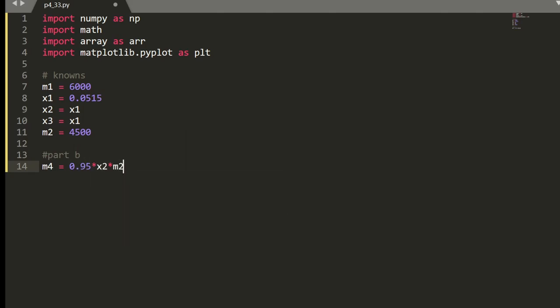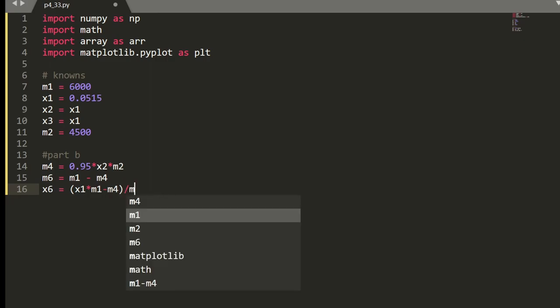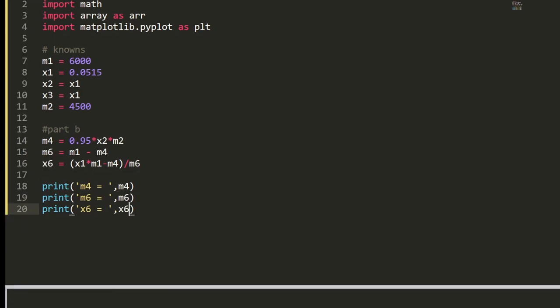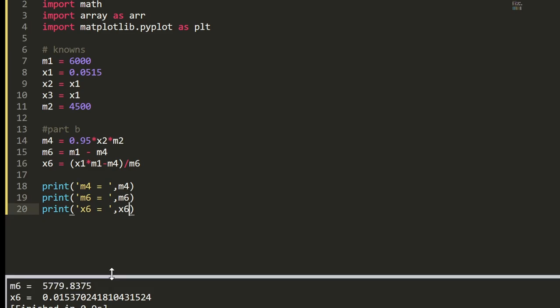So we have the equations. M4 equals 0.95 times x2 times M2. M6 equals M1 minus M4. x6 equals x1 times M1 minus M4 divided by M6. And then we can display these results and then just print what we have before. M4 equals the value for M4. I quite like Python just because of variables and programming in general. Variables are just so much fun to work with. And then we can change M6 and x6. So those are the answers, hopefully, that we got before. So now I'm going to print these results.